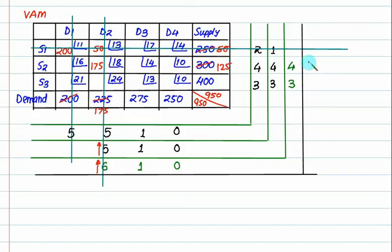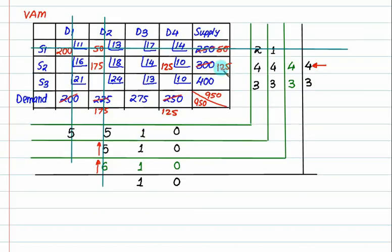Cost 14 and 10 gives penalty 4; cost 13 and 10 gives 3; cost 14 and 13 gives 1; cost 10 and 10 gives 0. Maximum penalty is 4. Minimum cost is 10. Available is 125, requirement is 250. Can we give 125? Yes. Left is 125. Strike off row 2. Minimum cost is again 10, available 125 — cancel out. 275 remaining, cancel out. That finishes the allocation.